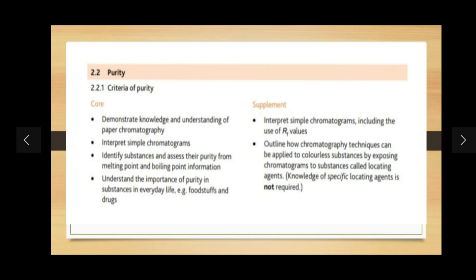We also discussed how to identify substances and assess their purity from their melting point and boiling point information, and how that information can be used to assess whether substances are pure or impure. In today's video we are going to discuss in detail the importance of purity in everyday life, with specific examples including foodstuffs and drugs, and we will interpret simple chromatograms including the use of RF values.